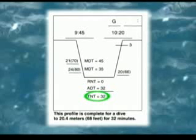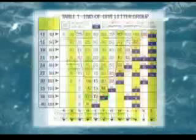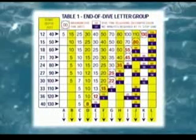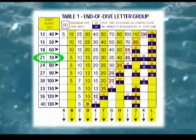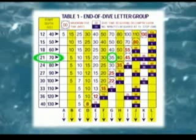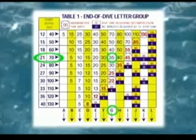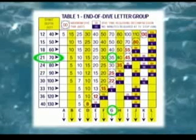Add your ADT to your RNT to get your TNT. On table one, find your letter group using your deepest depth and the time corresponding to your TNT. Record the letter group. This completes the dive profile for your first dive.